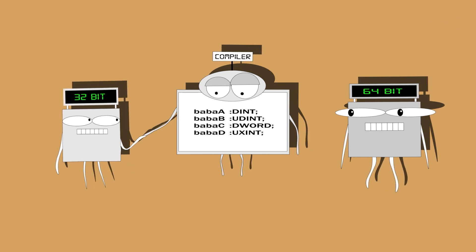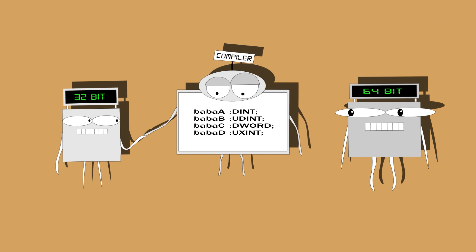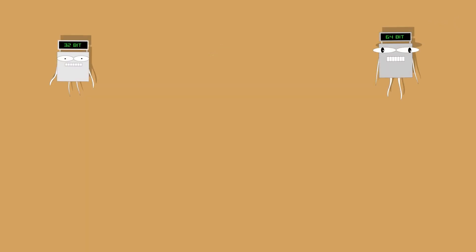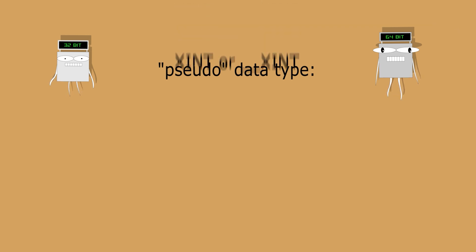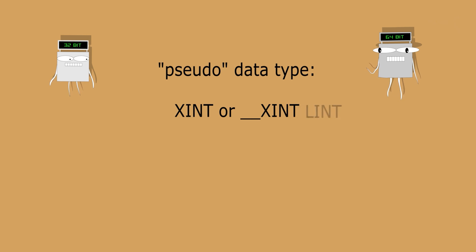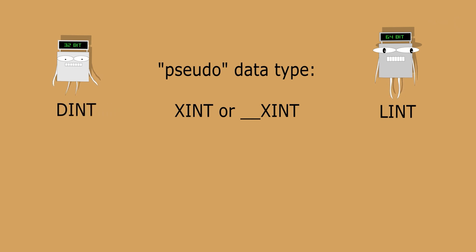You can also use the type conversion operators for variables of these data types. The following pseudo data types are available: ZINT, or __ZINT, is converted to the standard data type LINT on 64-bit platforms and to the standard data type DINT on 32-bit platforms.